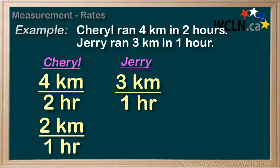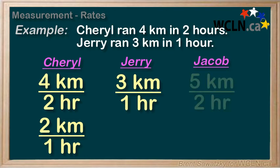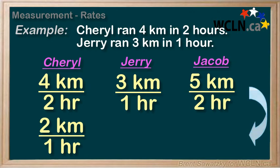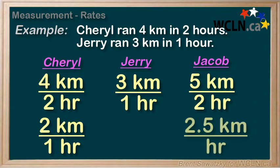Comparisons aren't always quite so easy — that is, just reducing them down like that. For example, if Jacob, a third runner, ran 5 kilometers in 2 hours, his rate is 5 over 2 kilometers per hour. To compare, we could just divide the two numbers. 5 divided by 2 is 2.5 kilometers per hour. Jacob has a smaller rate than Jerry — he's not going as quickly.